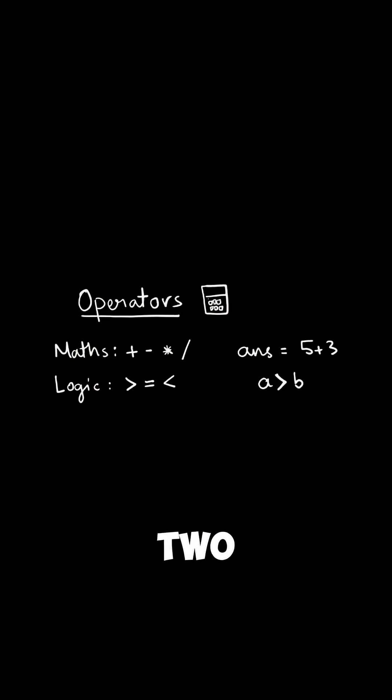Next we have operators. There are two types mainly: math and logic. Math operators are used to do some arithmetic like 5 plus 3, and logic operators are used to compare values like is a greater than b or not.